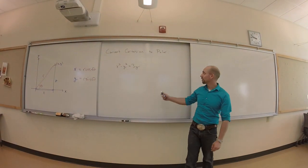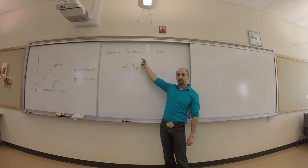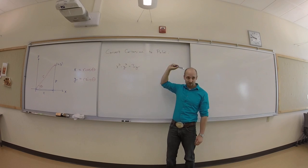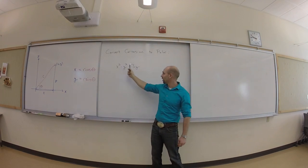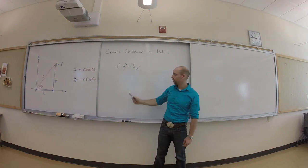All right, so we want to convert a Cartesian equation to a polar equation. I've got x squared minus y squared is 3y.